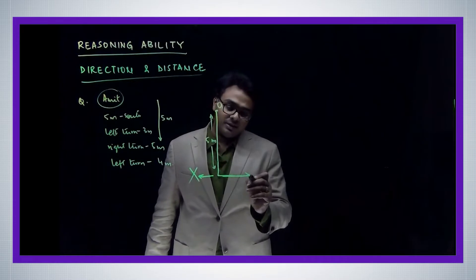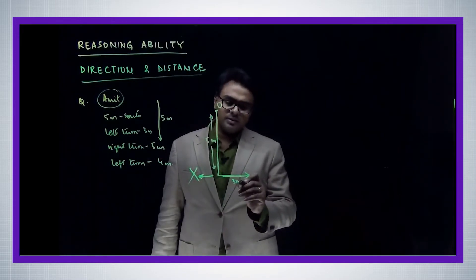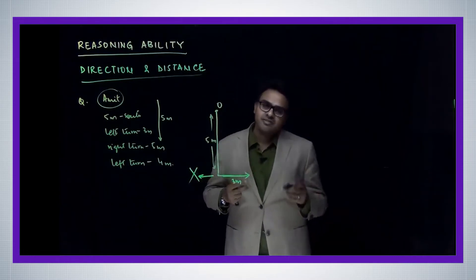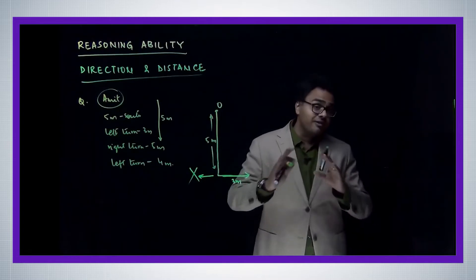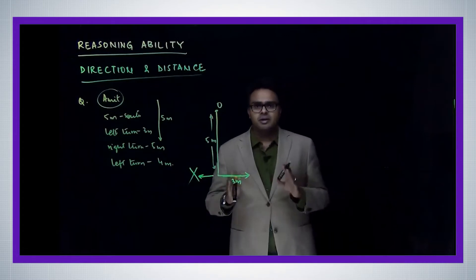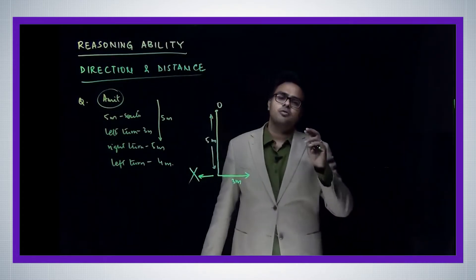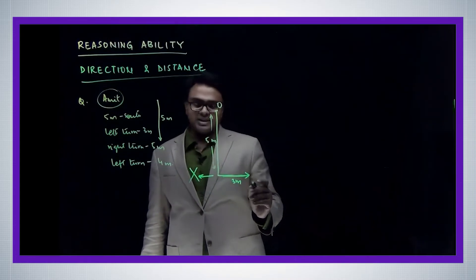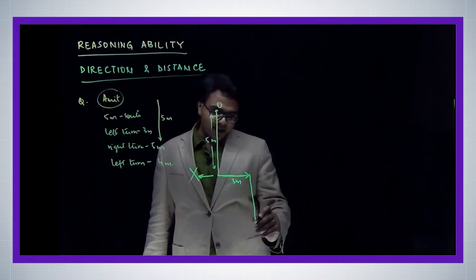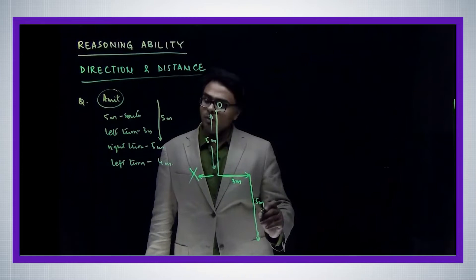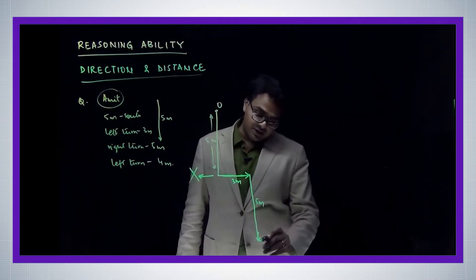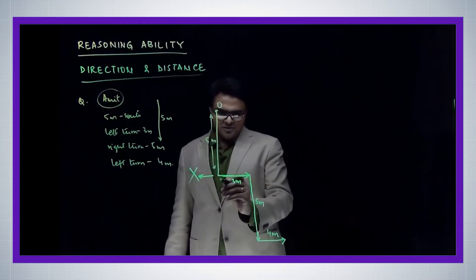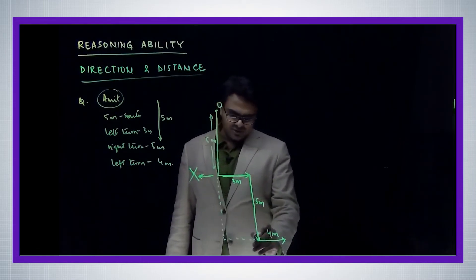So Amit takes a leftward turn in this direction and goes three meters. Now Amit's face is in this direction. The basic principle is: whichever direction a person is walking, their face is always in that direction — unless told they're walking backwards, which never happens in these questions. So now Amit walks three meters, takes a right turn, goes five meters, then takes another left turn and goes four meters.